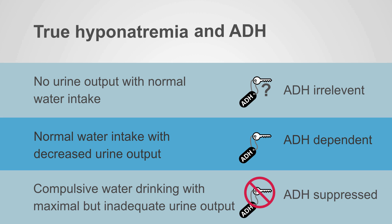The last category is patients with compulsive water drinking and maximal but inadequate urine output. In these patients, ADH is suppressed, which is why they're making maximal urine output. In this chapter, we'll discuss a special case where ADH is suppressed and maximal urine is being made — it just doesn't look like much urine because of an unusual diet.